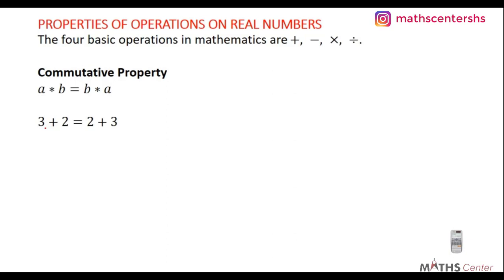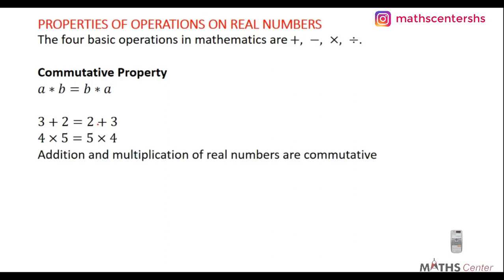For example, 3 + 2 equals 5, and 2 + 3 also equals 5 — so addition is commutative. Similarly, 4 × 5 = 20 and 5 × 4 = 20, so multiplication is also commutative. Both addition and multiplication of real numbers are commutative.